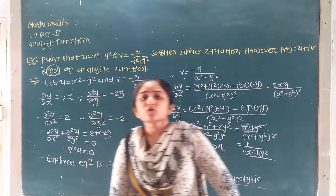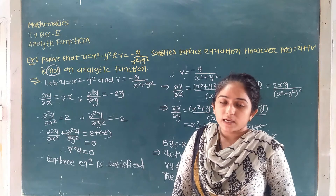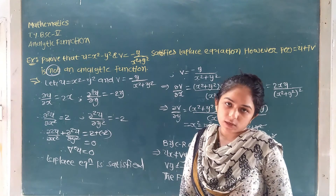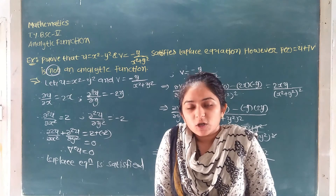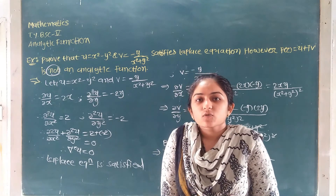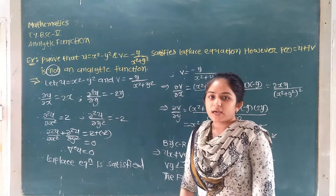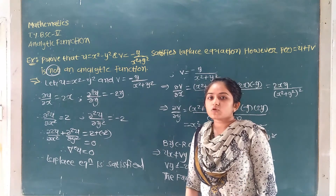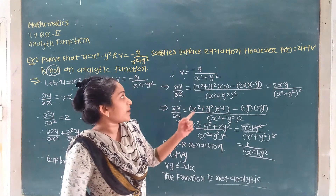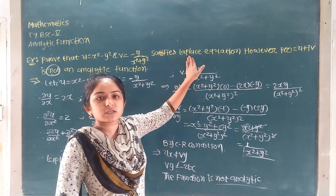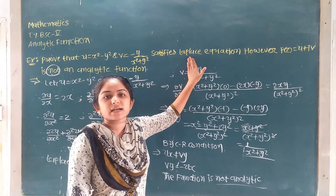So theta is equal to tan inverse of y upon x, and x squared plus y squared is equal to r. Then squaring both sides, x squared plus y squared is equal to r squared. The section of the line is restricted.